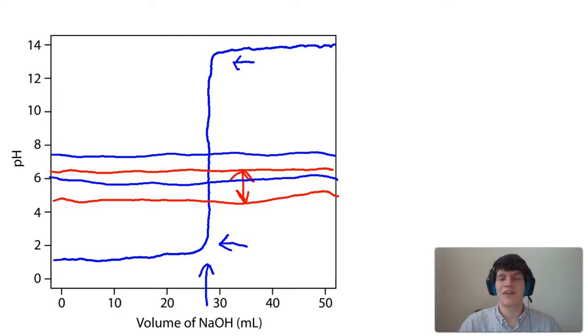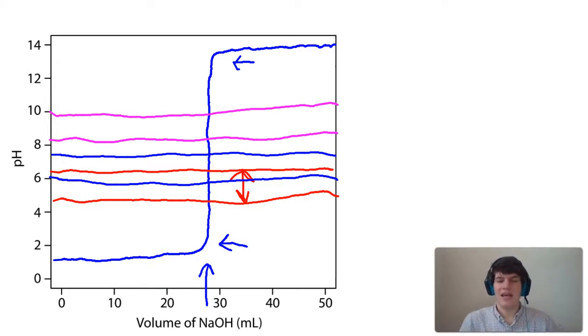And finally, let's consider phenolphthalein. We're told that phenolphthalein changes colors between a pH of 8.2 and 10. And we'll notice once again that this indicator is going to change colors as soon as we've added about 28 mL of base, once again telling us about how much base we had to add to reach the equivalence point.